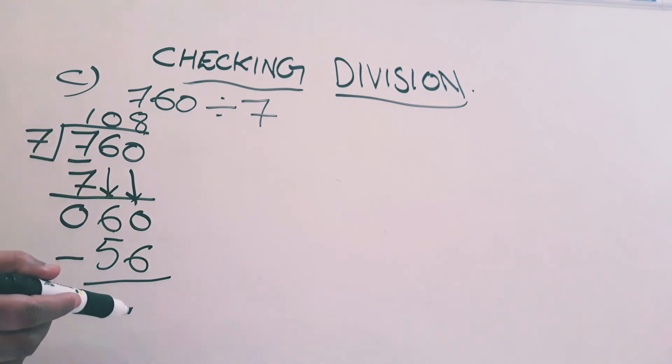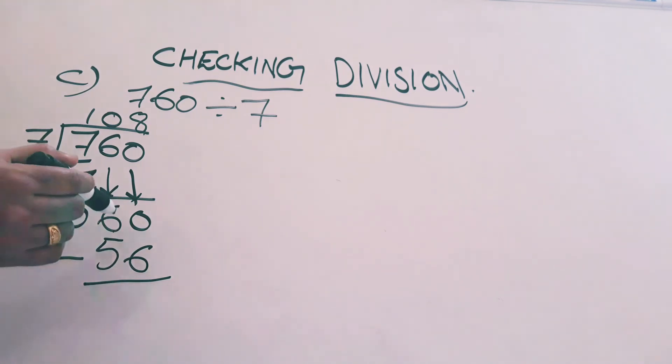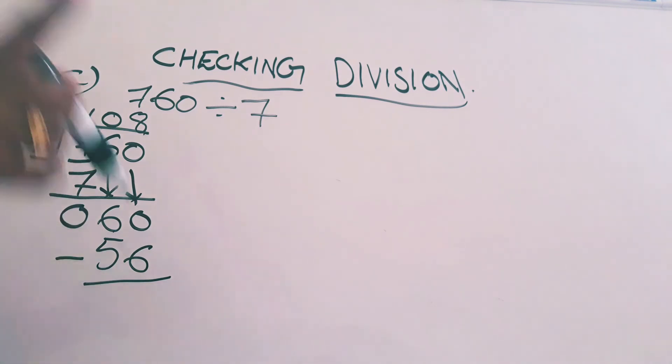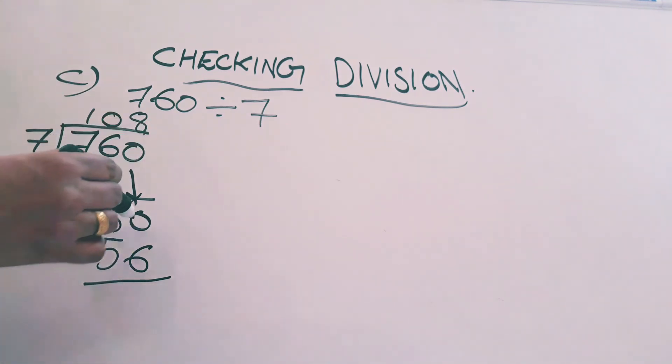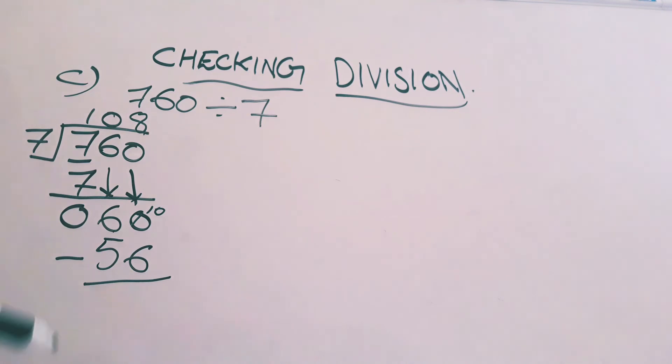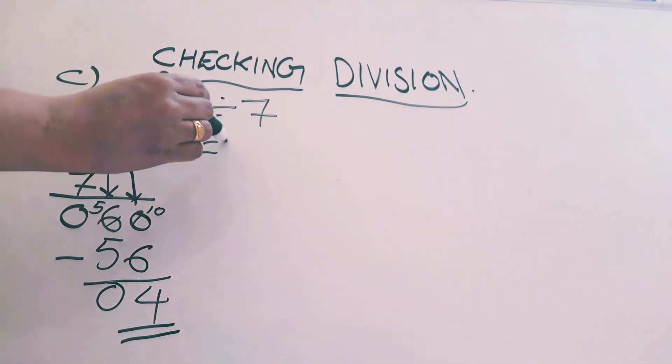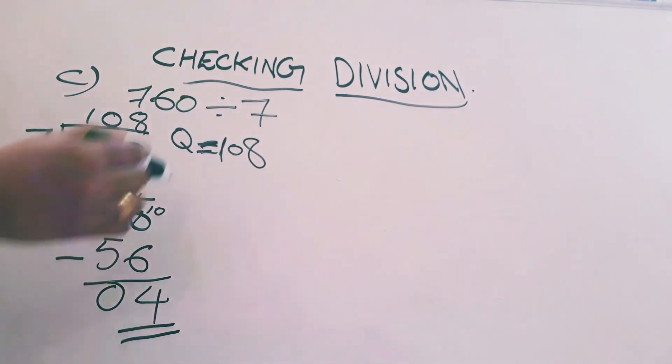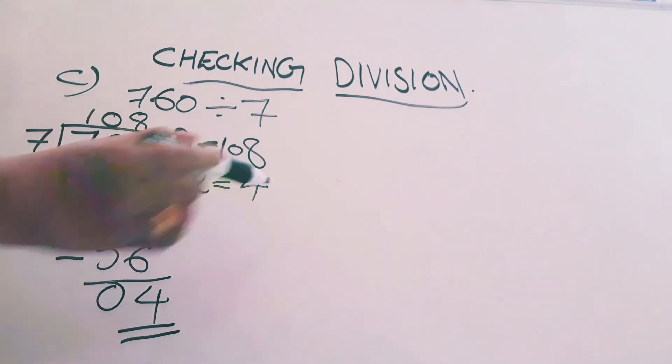Do minus. Here we have to do regrouping. Or if you can do in the mind, 60 minus 56 is 4. Those who can't do in the mind, they have to regroup here itself. 0 will be 10, this 6 will be 5. 10 minus 6 is 4. 5 minus 5 is 0. We got the remainder 4. 4 means 4. Quotient is 108. Quotient is equal to 108, remainder is equal to 4.